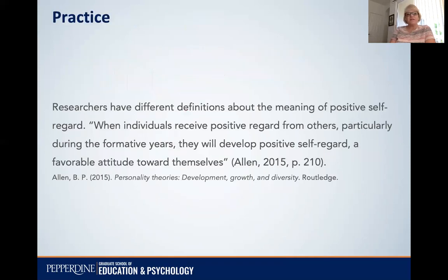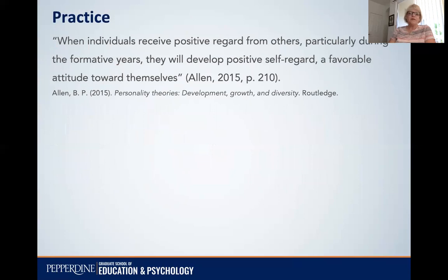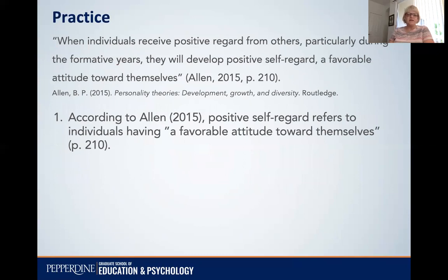So here's some practice. I just wrote a sentence to introduce this and then I have a quotation: 'Researchers have different definitions about the meaning of positive self-regard.' And here's the quote: 'When individuals receive positive regard from others, particularly during the formative years, they will develop positive self-regard, a favorable attitude toward themselves.' Instead of just beginning the sentence with it and providing very little context, let's try a couple of different approaches. Number one, according to Allen, positive self-regard refers to individuals having a favorable attitude toward themselves. I focused on only five words from the quote — this quote says more than that, but I just wanted to pull out a small amount of it.